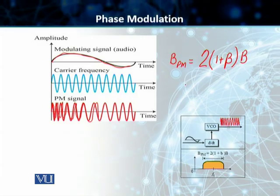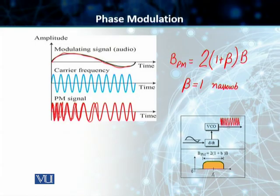Students, in this particular case, the value of beta can be different from what we had in the case of frequency modulation. The beta can be 1 for narrowband communication, and the beta can be 3 for wideband communication.